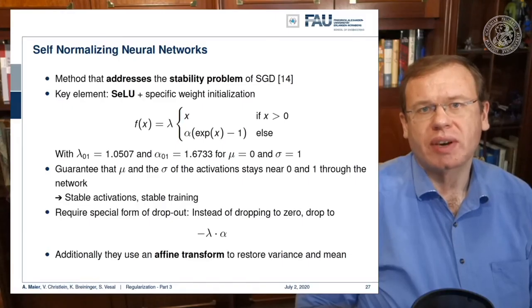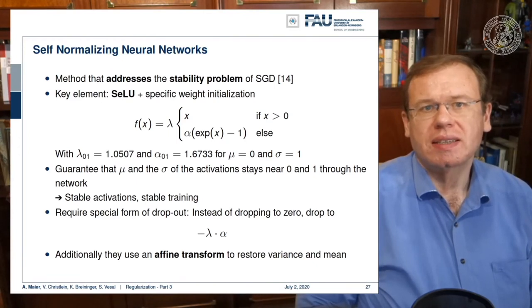Another tool that is also very effective is the self-normalizing neural network. It also addresses the stability problem of stochastic gradient descent. And the key element here is the scaled exponential linear unit that we already discussed in the activation functions. So here we have the definition again. With the particular setting for lambda and for alpha, we can ensure the property that a zero mean and unit standard deviation will have the same mean and standard deviation at the output of the layer. Then the result is that stable activations also lead to stable training.